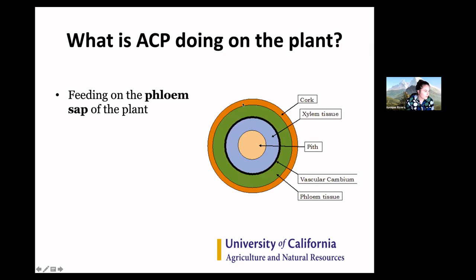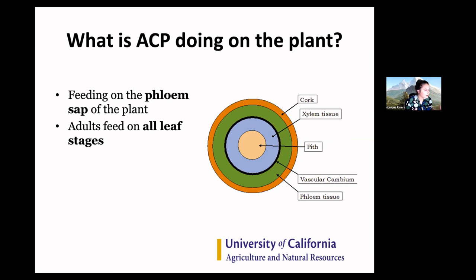Phloem is really the vascular system of the plant — that's how it moves nutrients throughout, and it runs throughout the entire plant. The adults can feed on all stages of the leaves because they are mature and have a hardened exoskeleton. The adult can feed on the hardened-off leaves, though you'll still often see adults gathered on newer flush because it's simply easier for them to eat from.